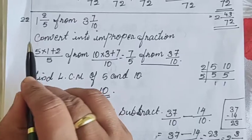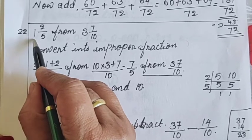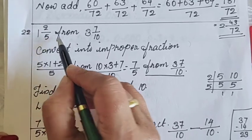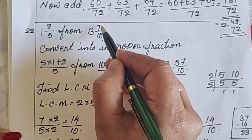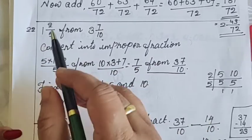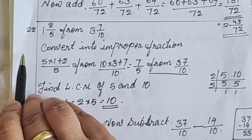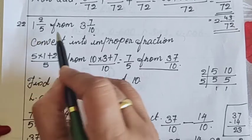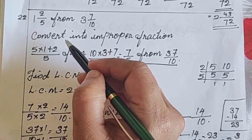So today we will do the 22nd question that is a subtraction. Addition we have done earlier. Now the same fractions subtraction. Let's see how to do. Subtract 1 whole 2 by 5 from 3 whole 7 upon 10. Check the denominators are same or different. It is different.